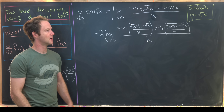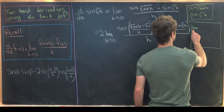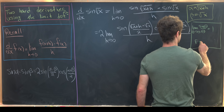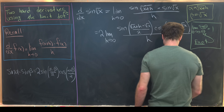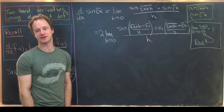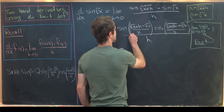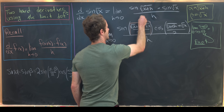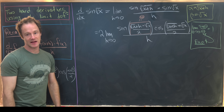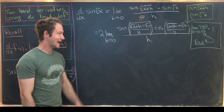Now I want to use the fact that the limit as θ goes to zero of sin(θ)/θ equals one. We want to force something that looks like sin(θ)/θ into this expression. The obvious choice is for (√(x+h) − √x)/2 to play the role of θ, but we don't have anything like that in the denominator. So if we add it to the denominator we'll have to include it in the numerator as well — and that's exactly what we'll do.